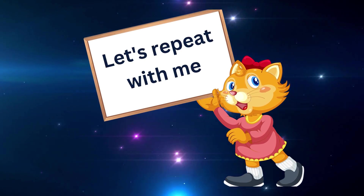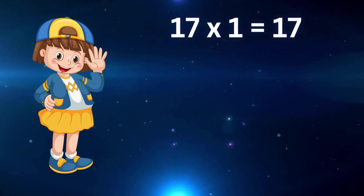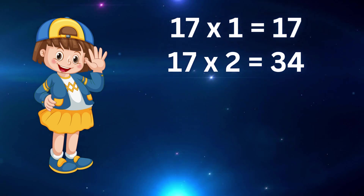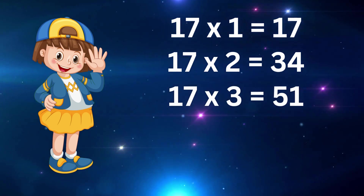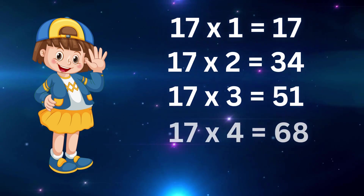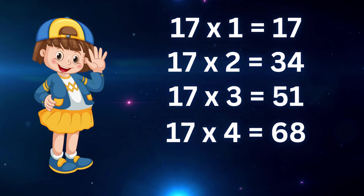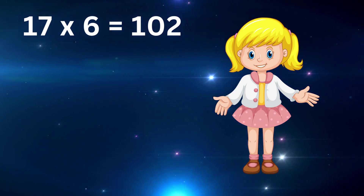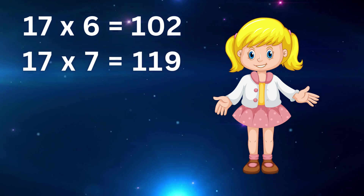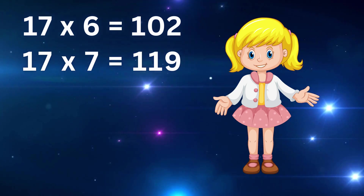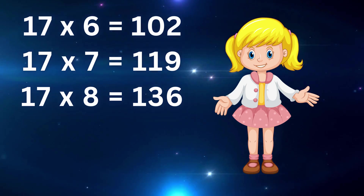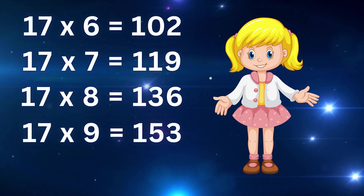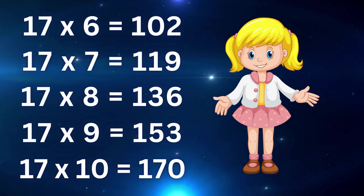Let's repeat with me: seventeen one's are seventeen, seventeen two's are thirty-four, seventeen three's are fifty-one, seventeen four's are sixty-eight, seventeen five's are eighty-five, seventeen six's are one hundred two, seventeen seven's are one hundred nineteen, seventeen eight's are one hundred thirty-six, seventeen nine's are one hundred fifty-three, seventeen ten's are one hundred seventy.